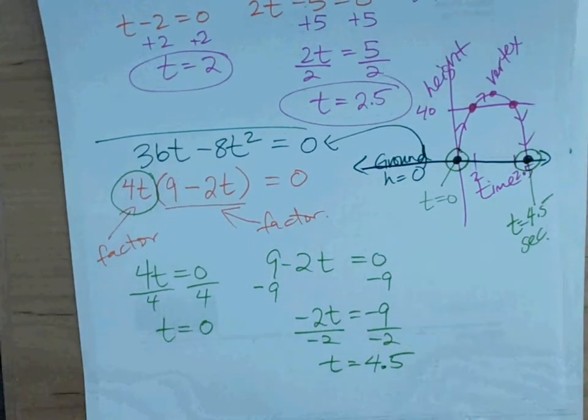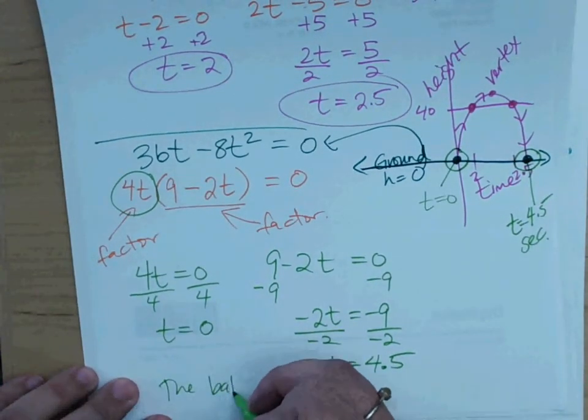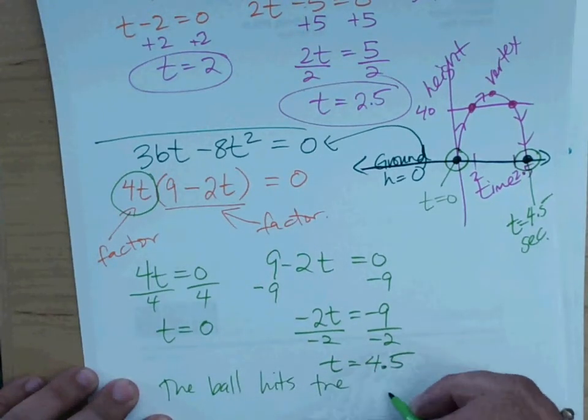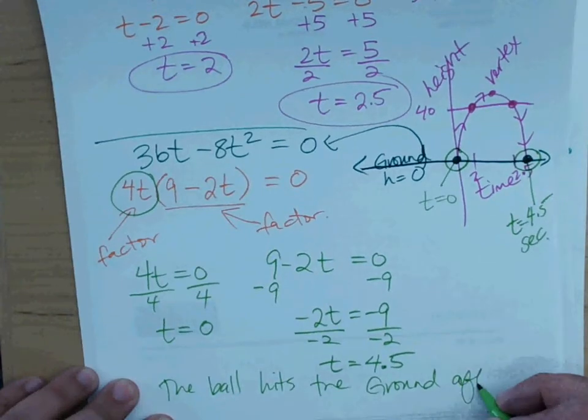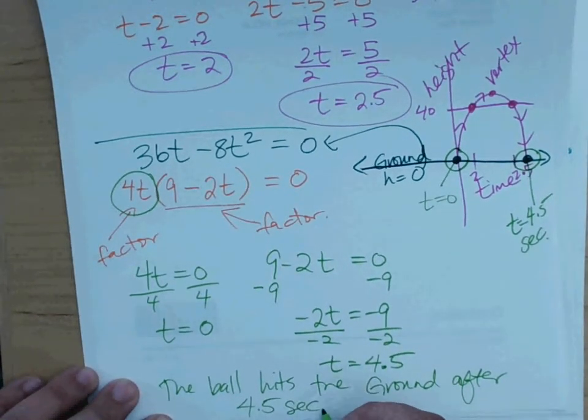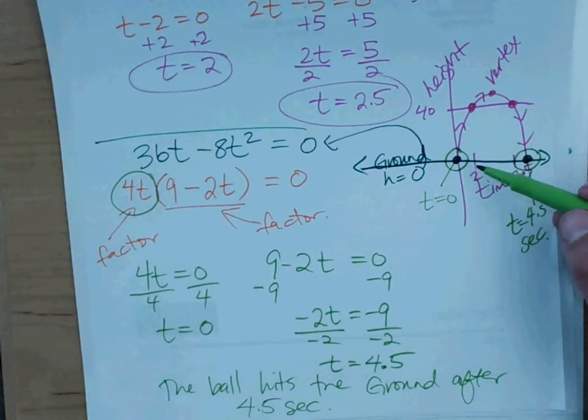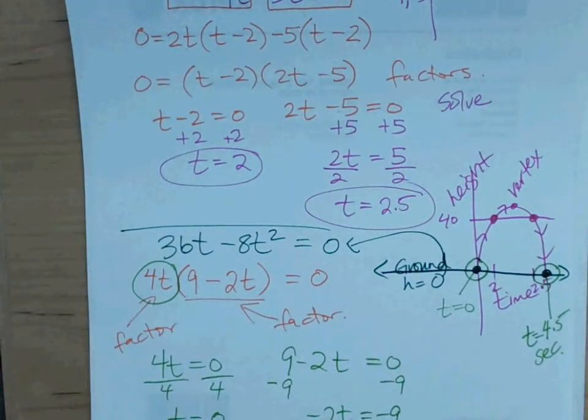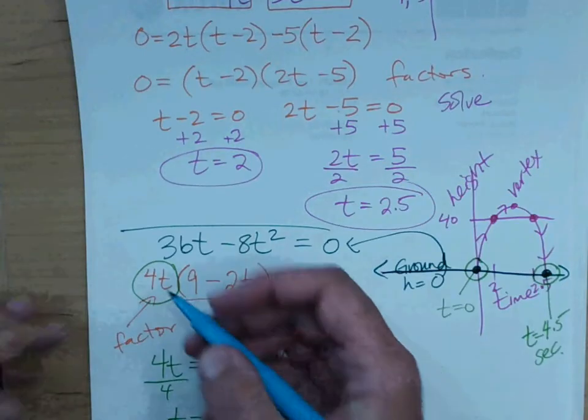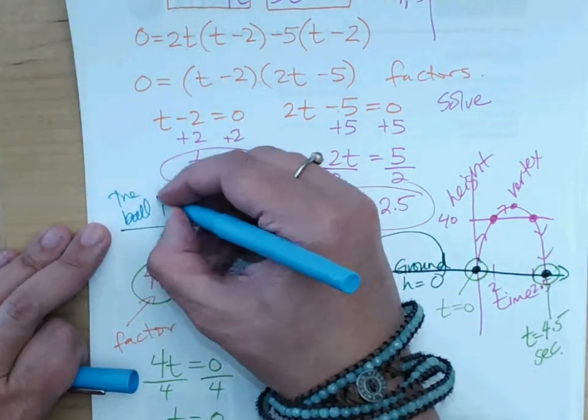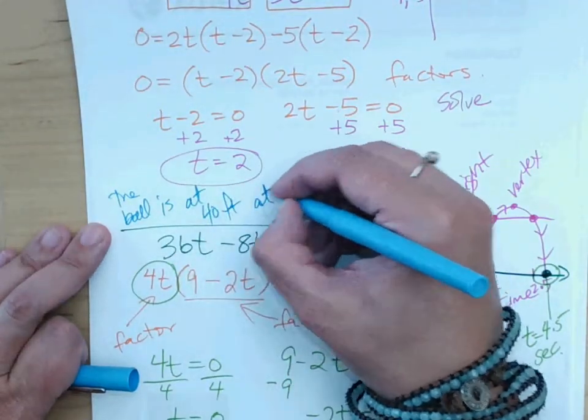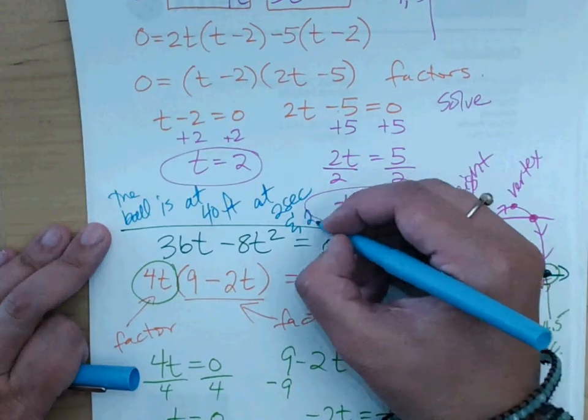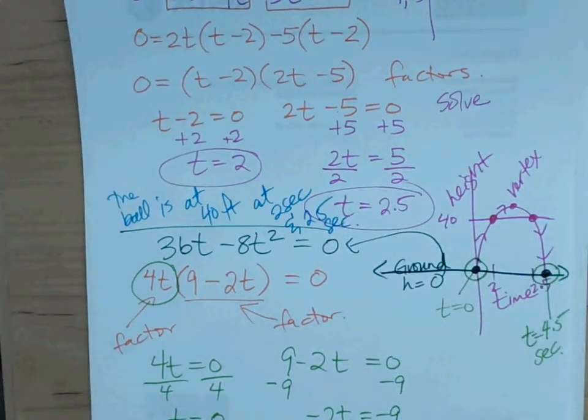So for word problems, we should write sentences. Okay? The ball hits the ground after 4.5 seconds. It started out on the ground at zero seconds at time zero as well. Here we could say what would be the sentences you would write for the previous question about the height of 40. The ball is at 40 feet at 2 seconds and 2.5 seconds. Okay, so we're writing complete sentences for these. Oh, since this was a long word problem, I will stop it and we'll do the next word problem on the next video.